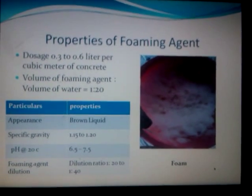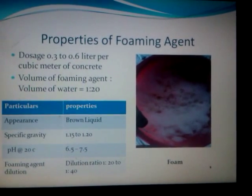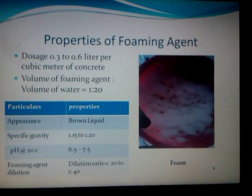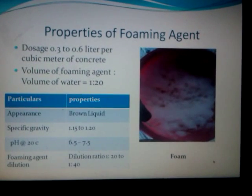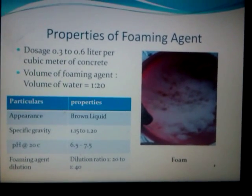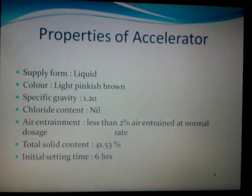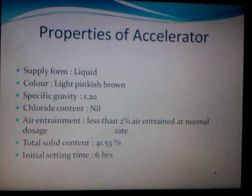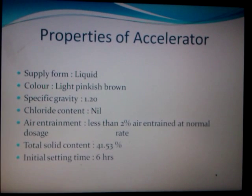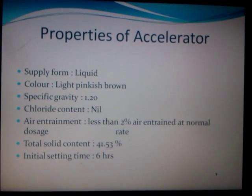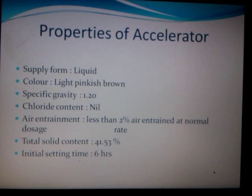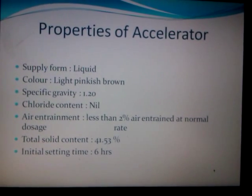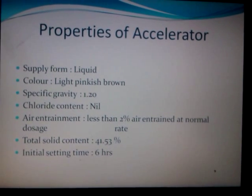These are the properties of the foaming agent. The foaming agent is used at a dosage of 0.3 to 0.6 liters per cubic meter, and the volume of foaming agent to water ratio is 1 to 20. We have added an accelerator to increase the initial setting time of the mixture. The accelerator is supplied in liquid form with a specific gravity of about 1.20.